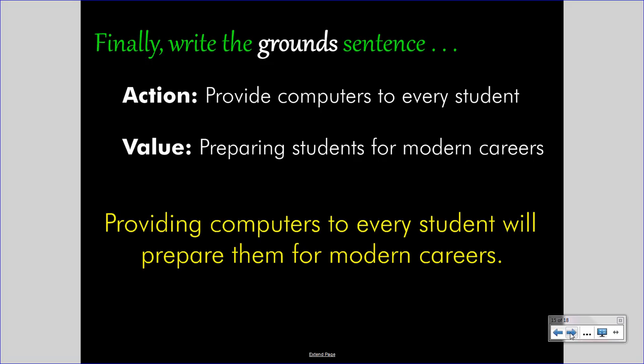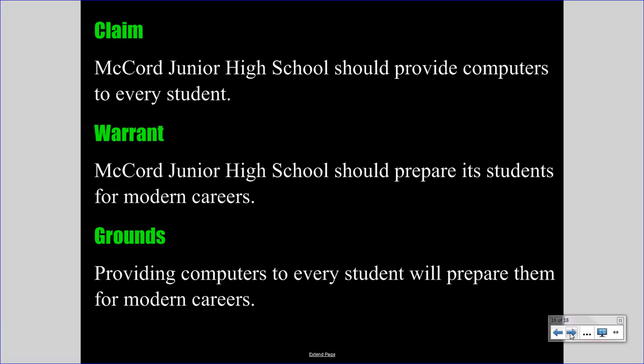This is the third of three sentences, and your Toulmin model is finished. Here's what we have: you are proposing that McCord Junior High School provide computers to every student. You're saying this is an action they should take, because McCord Junior High School should prepare its students for modern careers, and providing computers to every student will prepare them for modern careers. This is a logically intact argument — a three-line argument, also known as a syllogism. In order to propose a claim and support it, you propose these two sentences, the warrant and grounds, carefully constructed, and you have a logical basis for argumentation. Furthermore, you have a map, an outline, of the further discussion or paper to come.